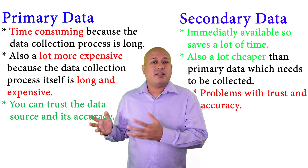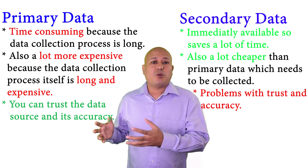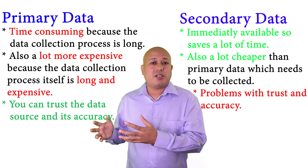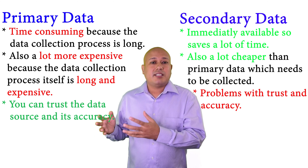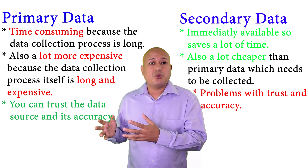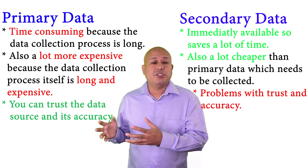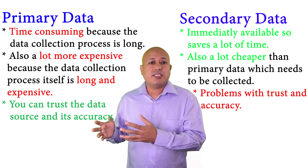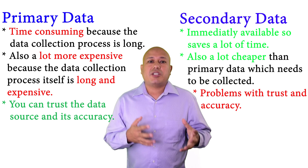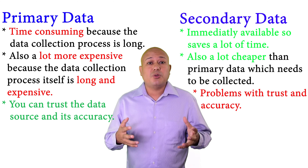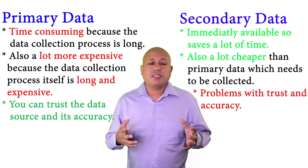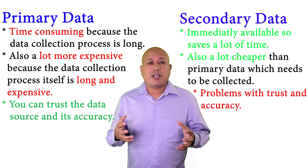With third-party secondary data, you don't know who funded the research, what their agendas were, or what types of questions they were trying to answer — all of which may have influenced the data collected. You also have no control over which variables were used. With primary data, you can trust the data and know exactly which variables were collected.